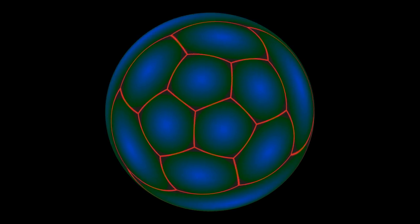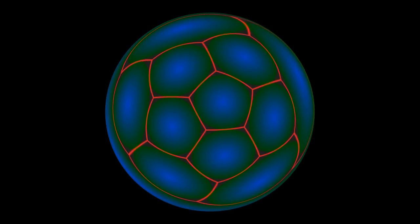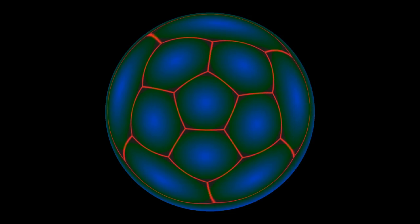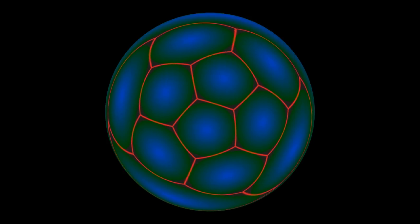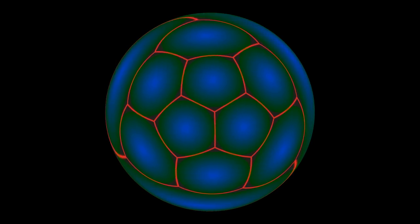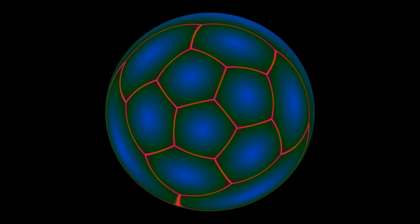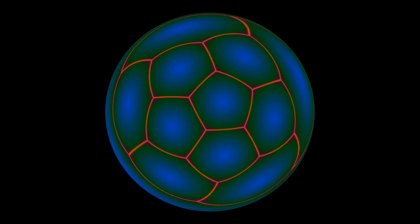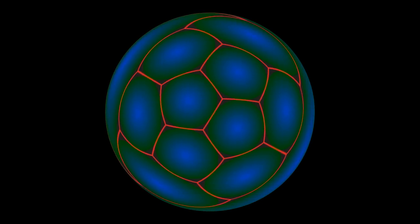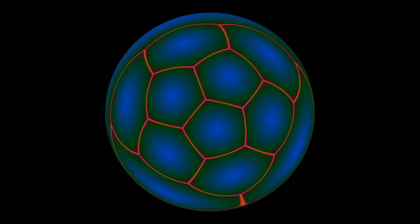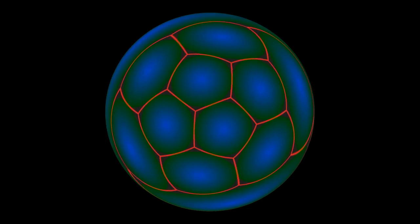All the projections in this video are what are known as azimuthal projections. This means that there is a point, called the center of projection, which is always in the exact center of the screen, such that straight lines through this point get projected to straight lines with the same angle. In other words, the bearing from this point is preserved by projection. The stereographic projection can be described as the unique azimuthal projection which preserves angles. The one we have here can be described as the unique azimuthal projection which preserves areas — it is the Lambert azimuthal equal-area projection.